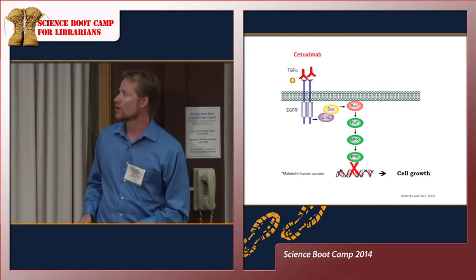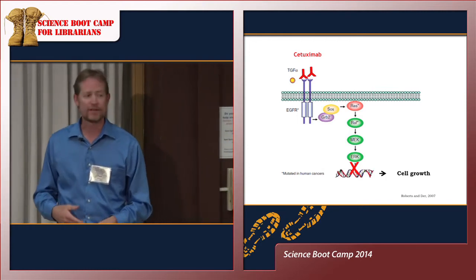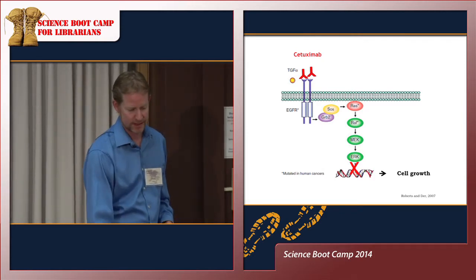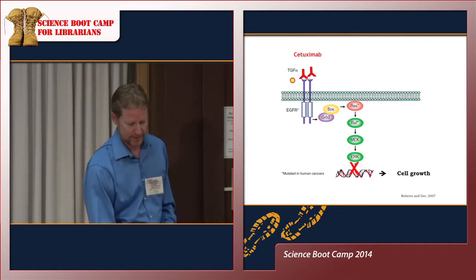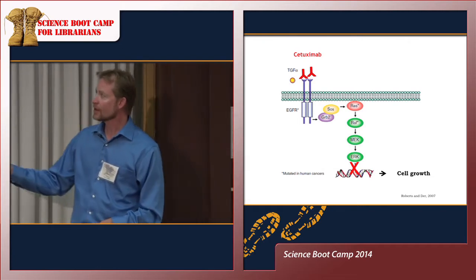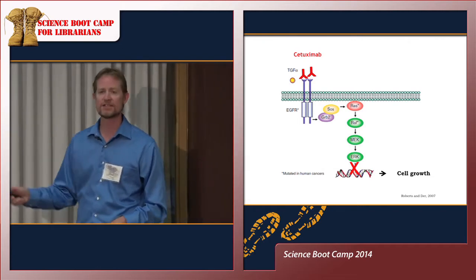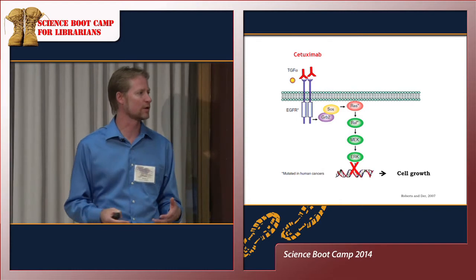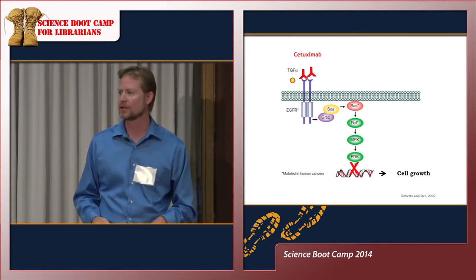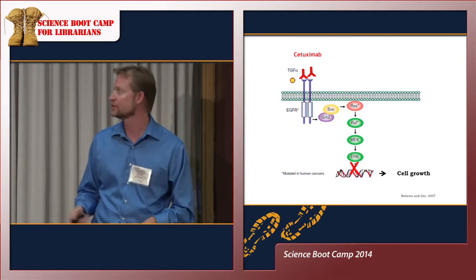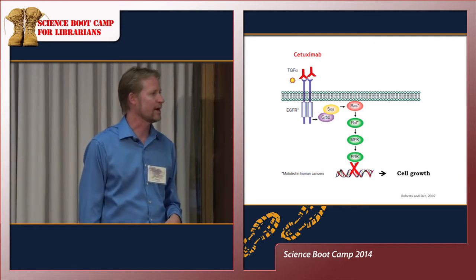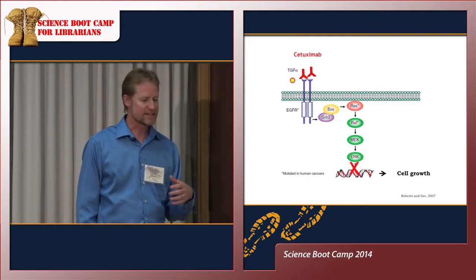The idea that researchers came up with is that cetuximab is a protein — this drug — that binds to these receptors at the same place that the small molecules would, and effectively competes out the small molecules. It inhibits the binding of these small molecules so that you can turn this pathway off.